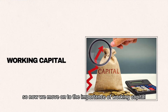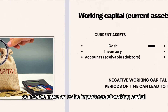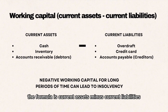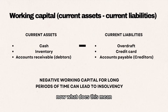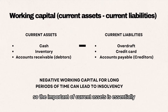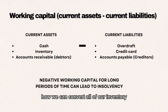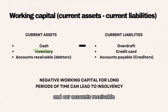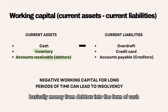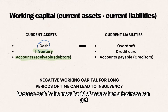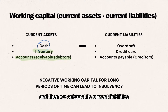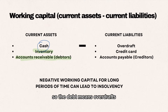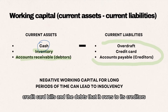Now we move on to the importance of working capital. The formula is current assets minus current liabilities. The importance of working capital is essentially how we can convert all of our inventory and accounts receivable — basically money from debtors — into cash, because cash is the most liquid asset a business can have. We then subtract current liabilities, which includes all debt: overdrafts, credit card bills, and debts owed to creditors.